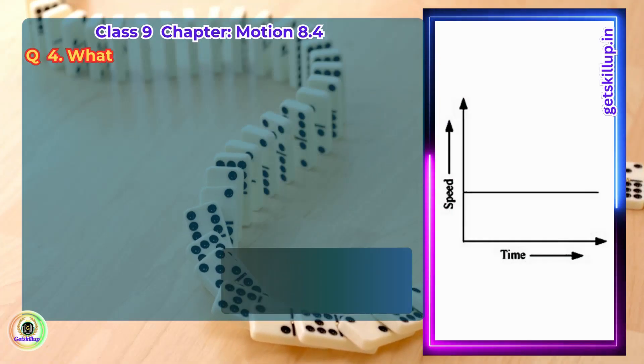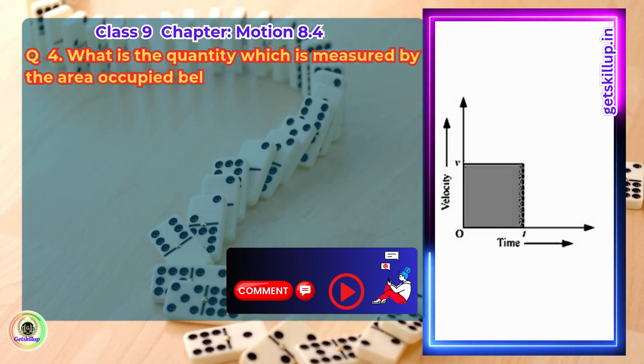Question 4. What is the quantity which is measured by the area occupied below the velocity-time graph?